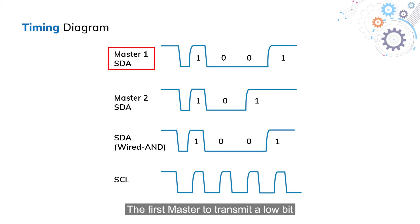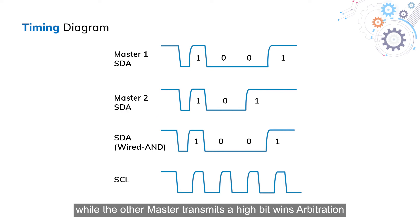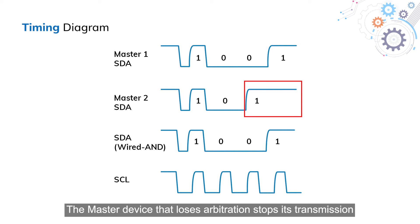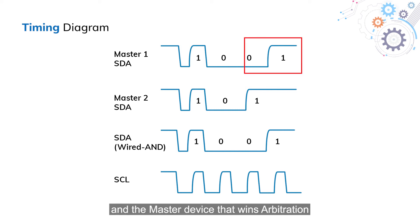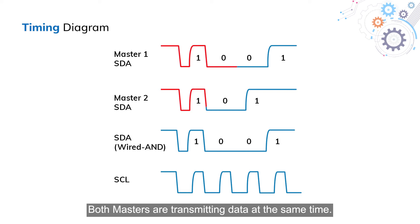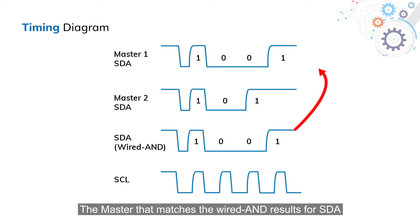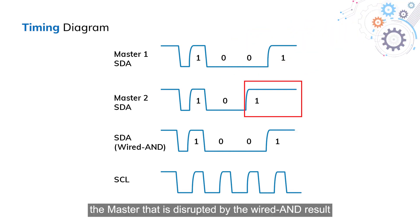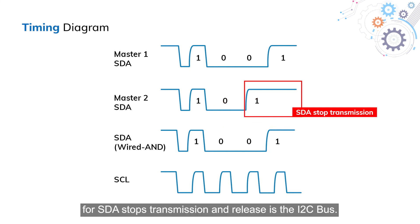The first master to transmit a low bit while the other master transmits a high bit wins arbitration. With the wired-AND connection, the master that wins arbitration does not have their communication disrupted. The master device that loses arbitration stops its transmission, and the master device that wins arbitration continues its communication uninterrupted. In this method of arbitration, both masters are transmitting data at the same time. The master that matches the wired-AND result for SDA is the master that wins arbitration. The master that is disrupted by the wired-AND result for SDA stops transmission and releases the I2C bus.